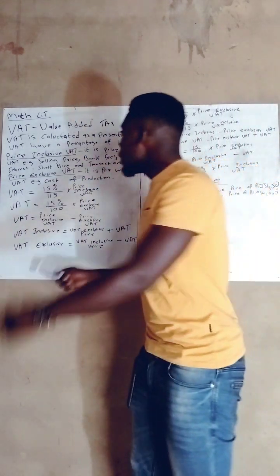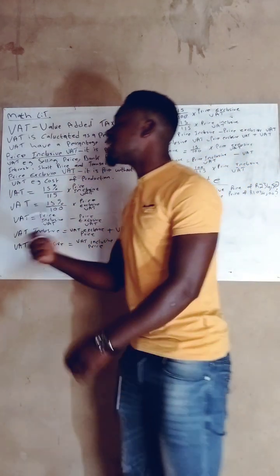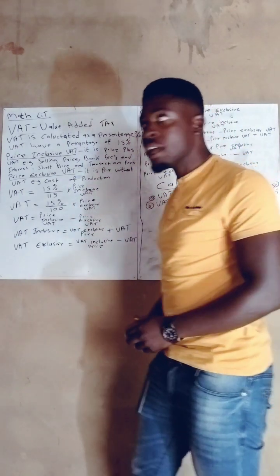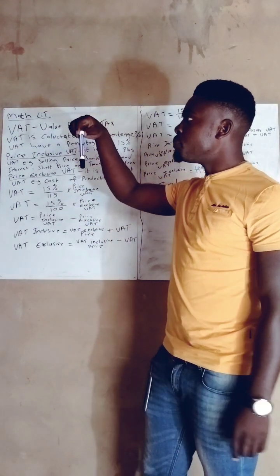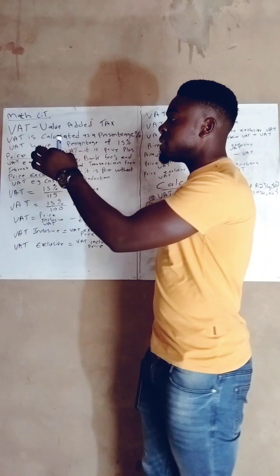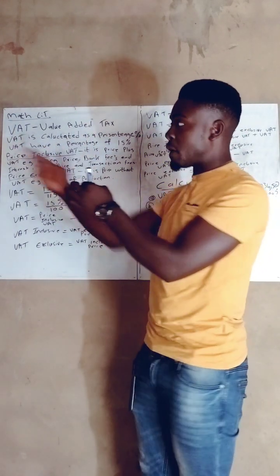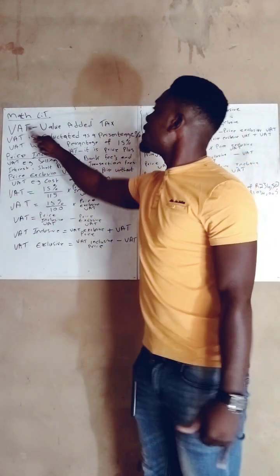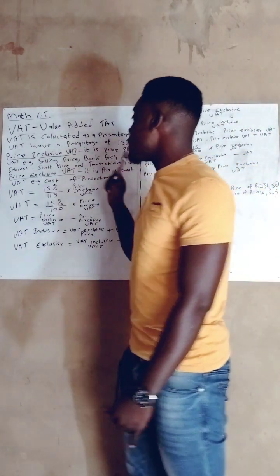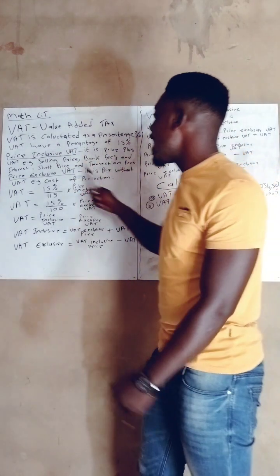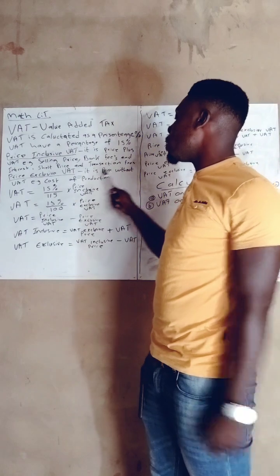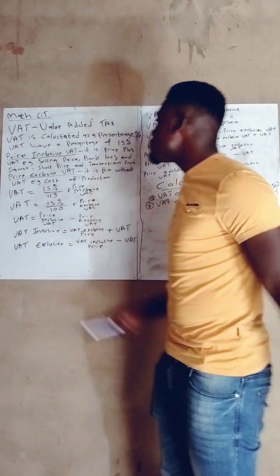Now let's move to price exclusive of VAT. When we talk about price exclusive of VAT, it is the price without VAT — without the cost of production VAT included. For example, if this whiteboard marker is 50 rand and they did not include any VAT, you buy it as it is. But if they say it's 50 rand and you end up paying 55 rand, that extra amount represents the excluded VAT added on top.